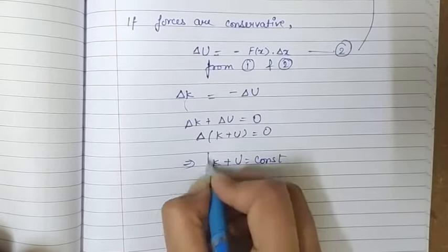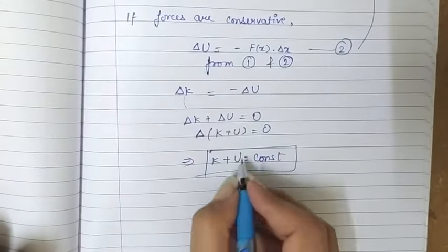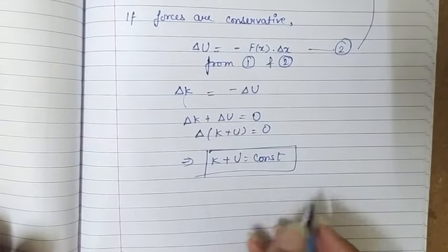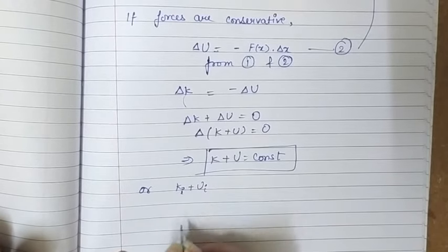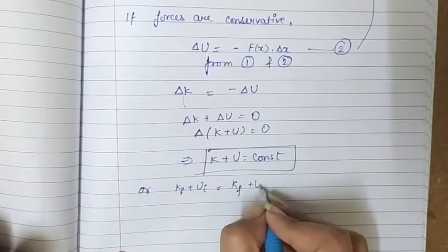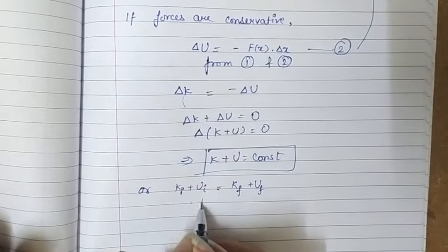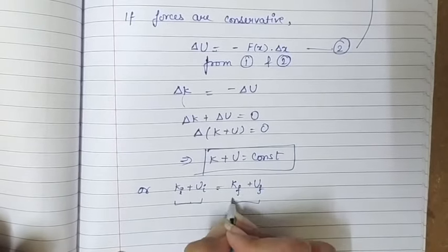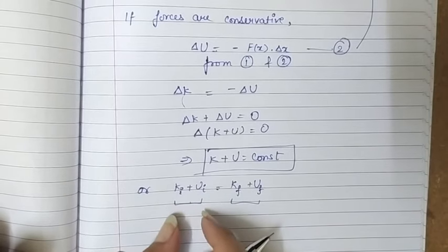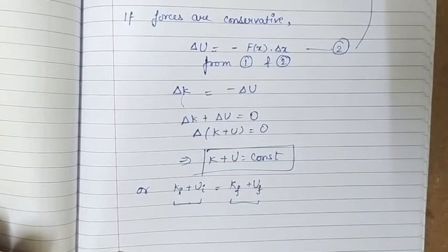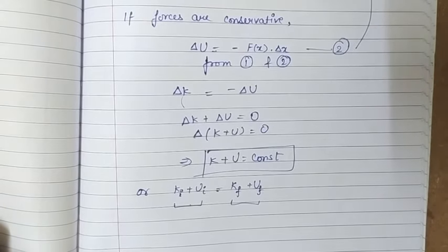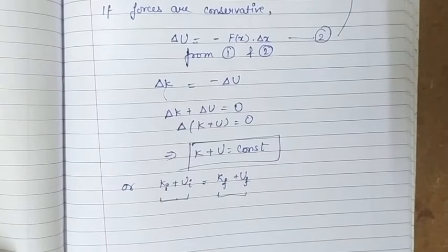This is the principle of conservation of mechanical energy. We can write that kinetic energy at the initial point plus potential energy at the initial point is equal to kinetic energy at the final point plus potential energy at the final point. So the mechanical energy at the initial point equals the mechanical energy at the final point. Hence the principle of conservation of mechanical energy is proved — if only conservative forces are doing work on a body, its mechanical energy remains constant. That's all for this video. Stay tuned and keep studying. Thank you.